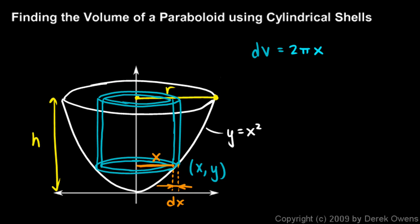2πx times the height. Now the height of the shell is this height right here, not the height h. Height h helps us find the height of the shell, but the height of the shell is actually h minus y, because this distance right here is y. Remember, this point has coordinates (x, y). So from the axis up to that height is distance y, and so the rest of the height has to be h minus y.